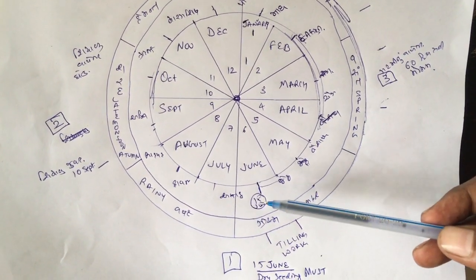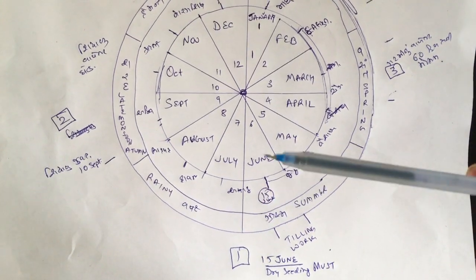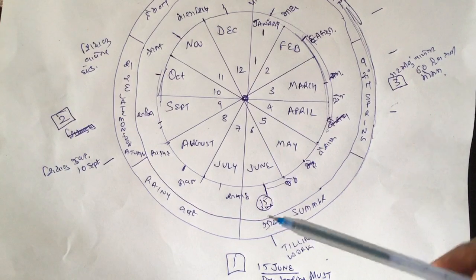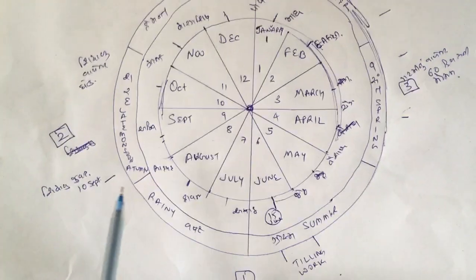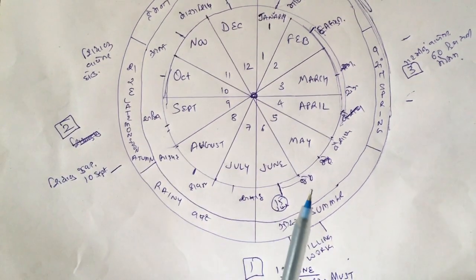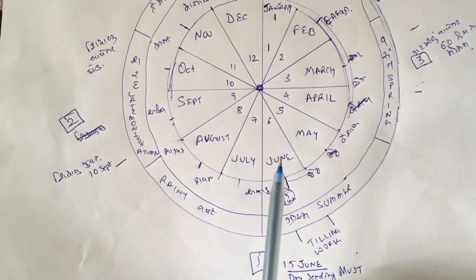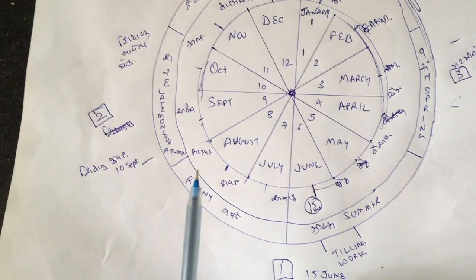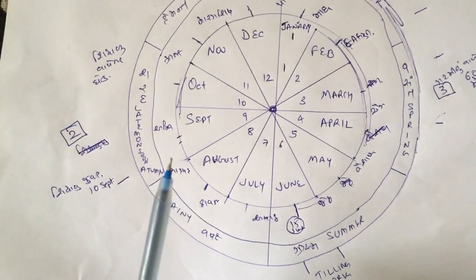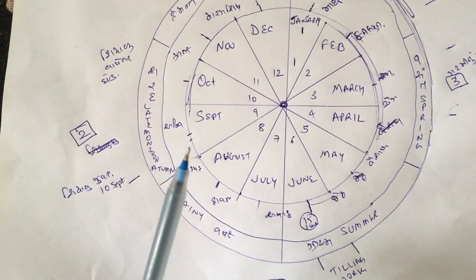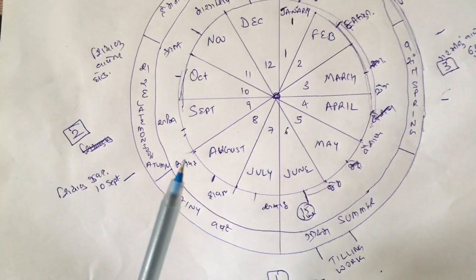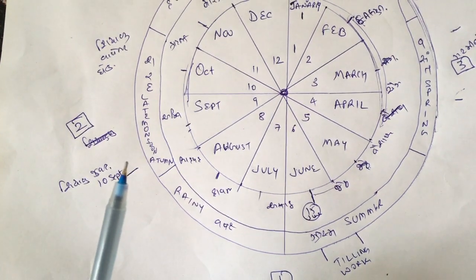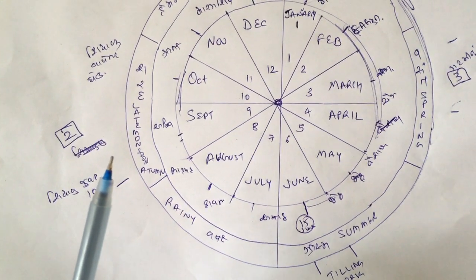On 15 June you should be ready to sow it and get it sown on the dry. Then there is rain in June, July, and August. The frequency decreases after that, and the climate starts changing.